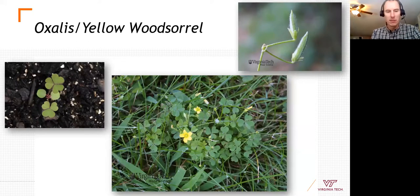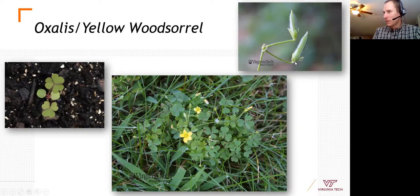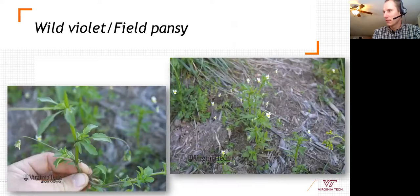Oxalis has a trifoliate leaf and is commonly mistaken for clover when not in seed. It has a distinctive small seed head that looks like a miniature okra pod. If you bite into the plant it actually has a sweet, tart flavor — it's one of the weeds that's genuinely edible.